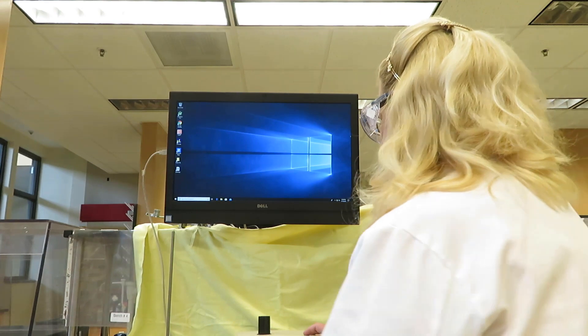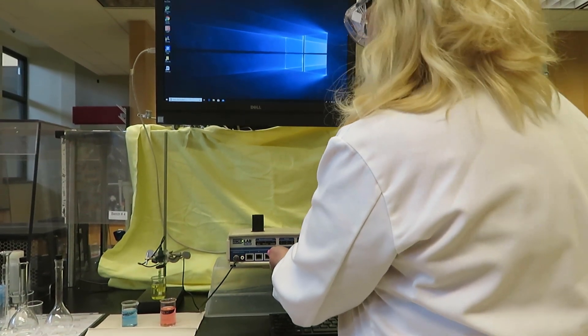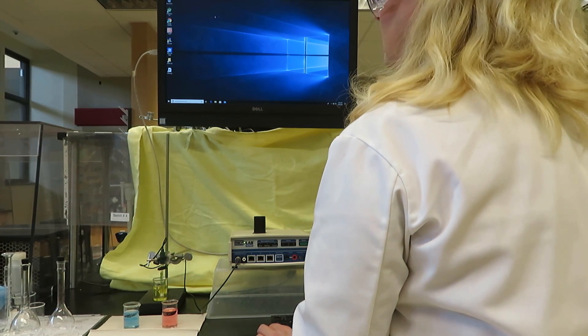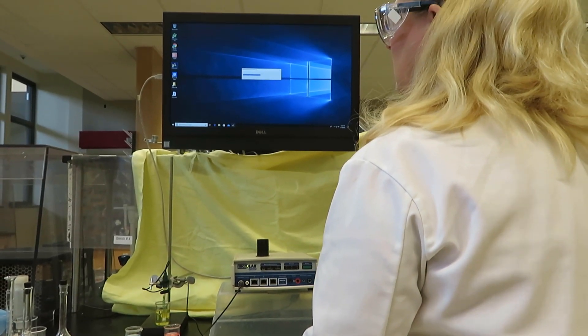We'll start by turning the Microlab unit on. The green button is shown, and now we can double-click on the Microlab app.